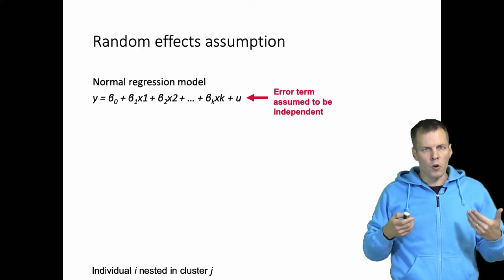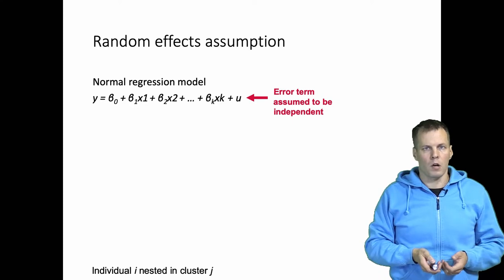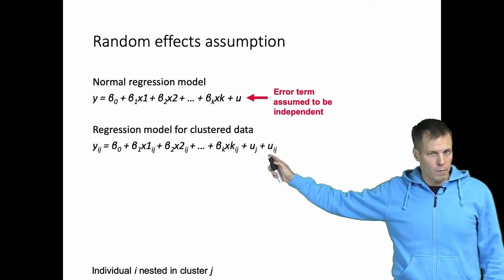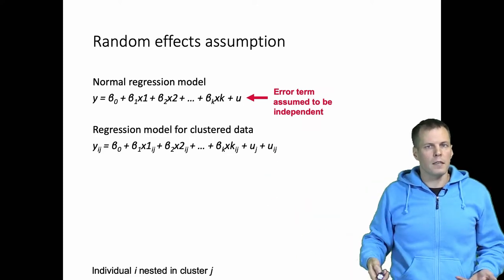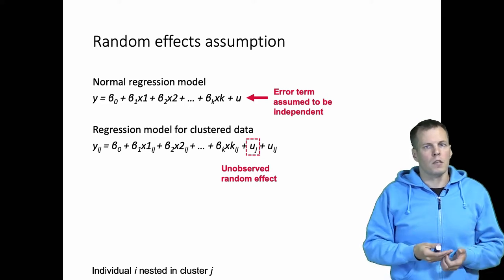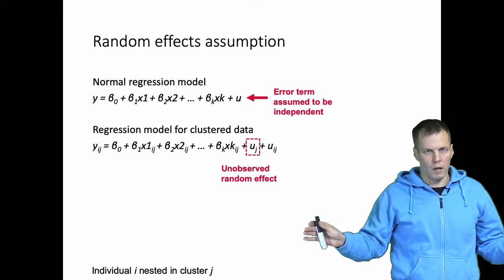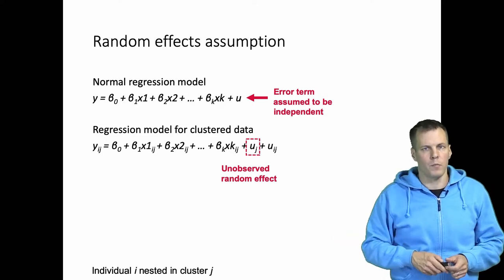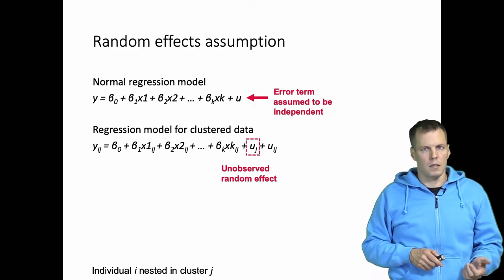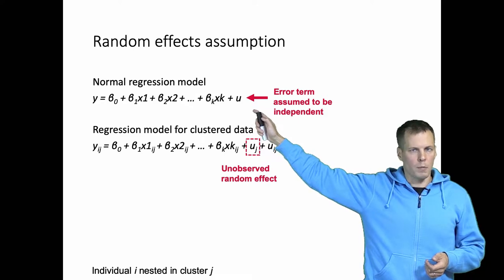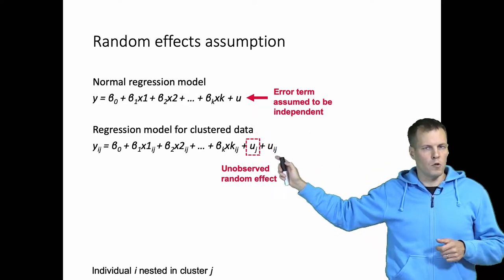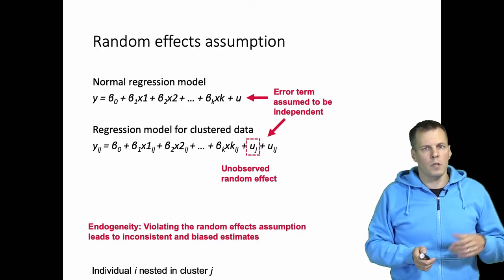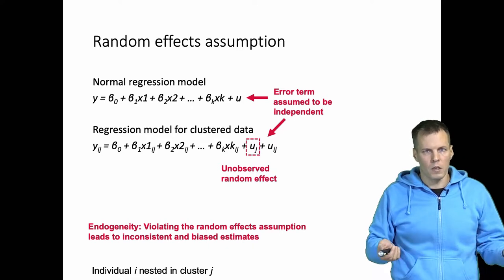When we move from this basic regression model to the multi-level regression model or panel data regression model, we add more components to the error term. We add at minimum this random intercept uj, which is an unobserved random effect. That uj tells how much clusters vary from one another — for example, how much individuals observed over time vary from other individuals observed over the same time points. In the multi-level modeling context, the assumption that the error term is uncorrelated with the predictors applies to both uj and uij, and failure of this assumption leads to an endogeneity problem which causes all coefficients of x to be potentially biased and inconsistent.